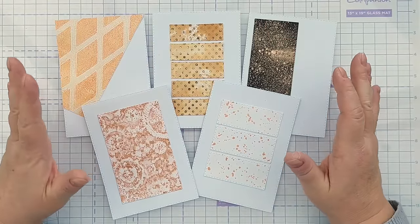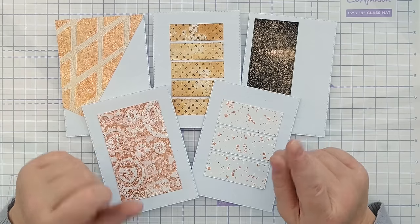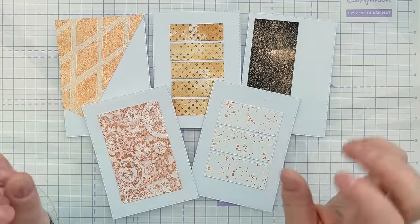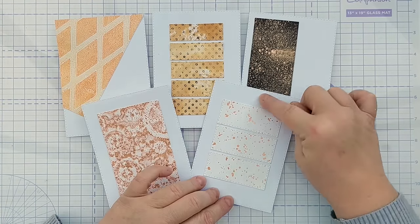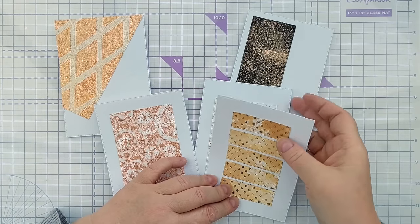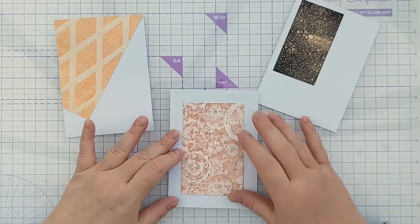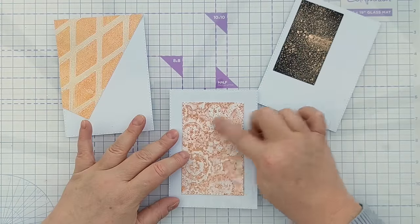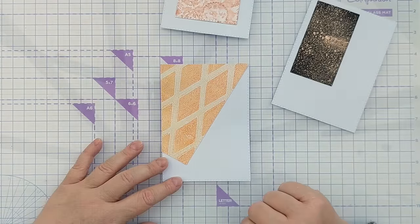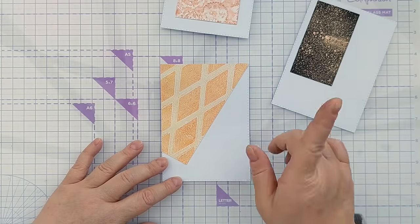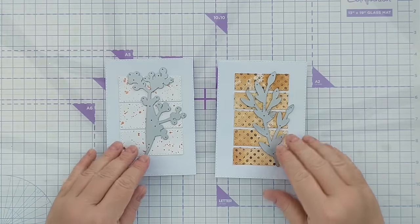When I'm doing something like this, I'm only thinking of the step that I'm doing, trusting that I've got dies and stamps that will work with the designs. I'm thinking this one and this one will get some kind of leafy branchy die on the front. This one I'm wondering about die cutting into it. This one I'm thinking keeping it simple and adding a die cut sentiment.